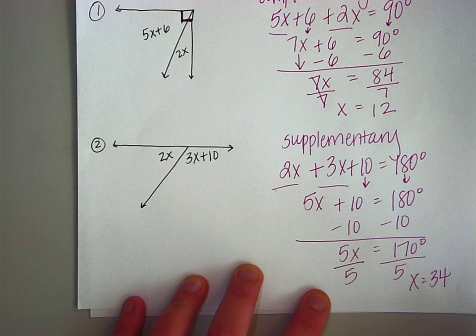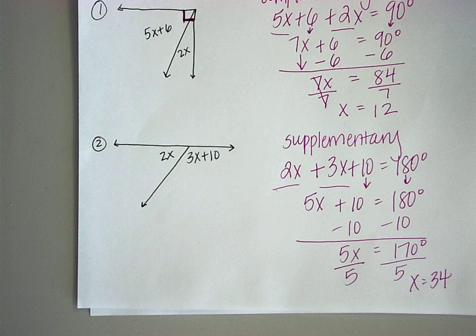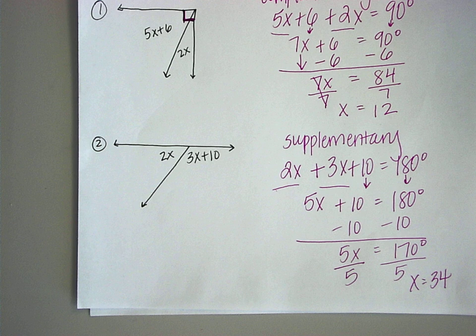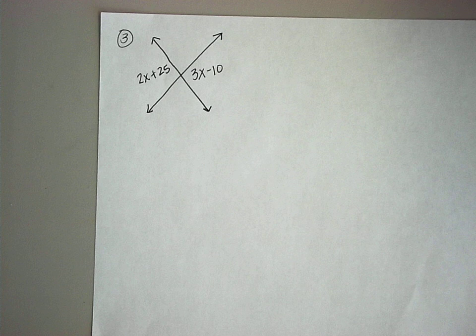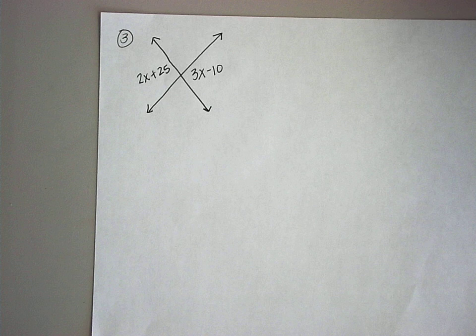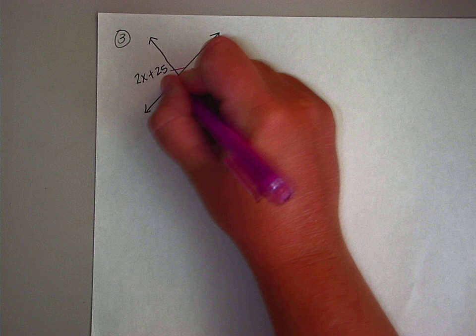Take a few minutes to write that down. Our last example — think about what type of relationship this is. It is vertical. They are across from each other at an intersecting point of two lines.